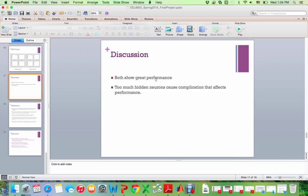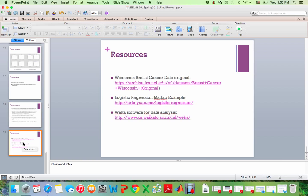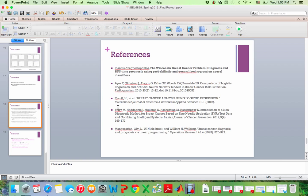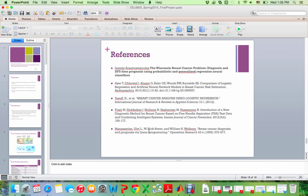So the result and discussion is that both methods show great performance with as low as 1.42% of error on the neural network application. And also, we know that there's too much hidden neurons actually cause a complication that will affect the performance in the inference and the resource. Okay, that's it. Thank you.